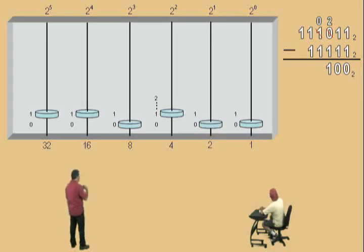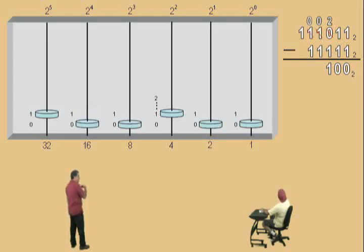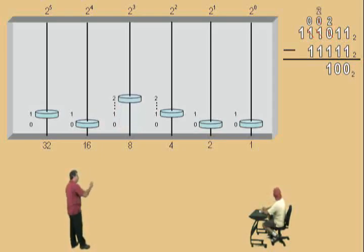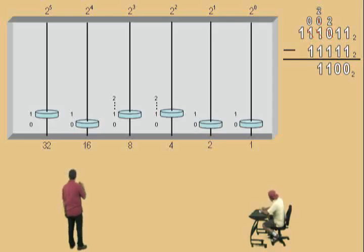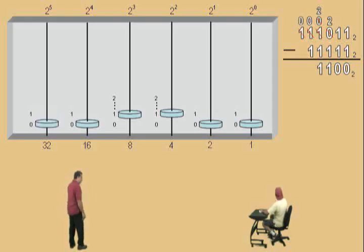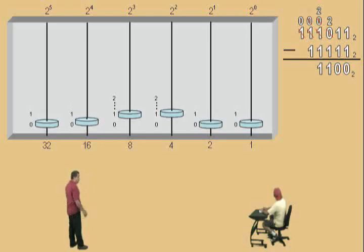Now notice in our 2 to the 3rd column, we have 0, and we're trying to subtract 1. So we have to go to our 2 to the 4th column and borrow 1 — that brings it down to a 0. And now we get to add 2 to that 0. What's 0 plus 2? 2. And you can do the subtraction — what's 2 subtract 1? 1. Now we're in our 2 to the 4th column. We have 0 there, and we're trying to subtract 1. So we have to borrow 1 from our 2 to the 5th column — that's going to become a 0. And now we get to add 2 to that 0. What's 0 plus 2? 2. And 2 subtract 1 is 1.